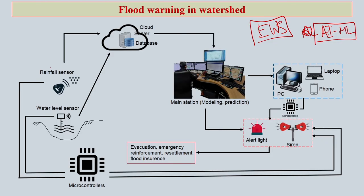For flood, how does it actually work? In very basic steps, you have some sensors — rainfall sensors which can detect and send a signal to the server in the cloud where databases are created. Apart from rainfall sensors, you can also have water level sensors: if the water level rises beyond a certain limit, it will automatically send a signal to the server and that data will be stored.